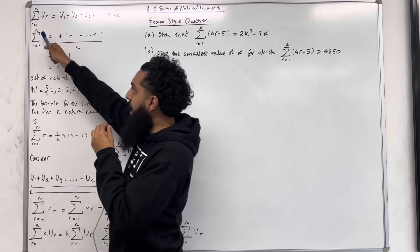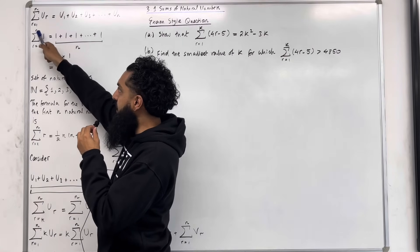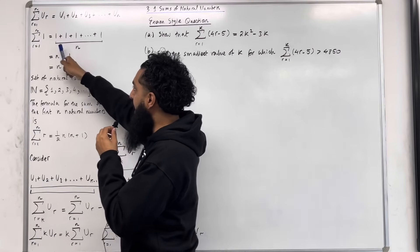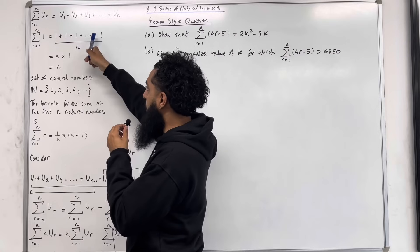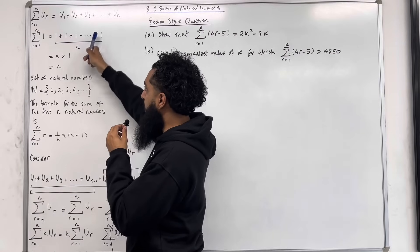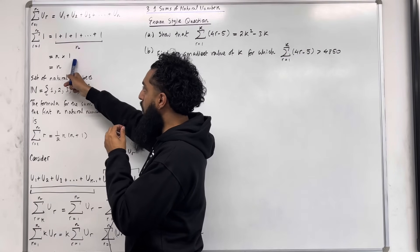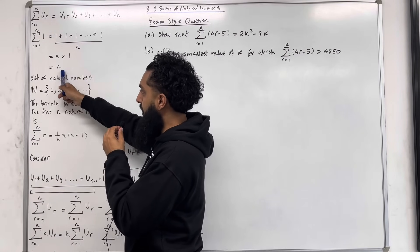The upper limit of the summation is N, so we have N lots of 1. This simplifies to N times 1, which simplifies to N.